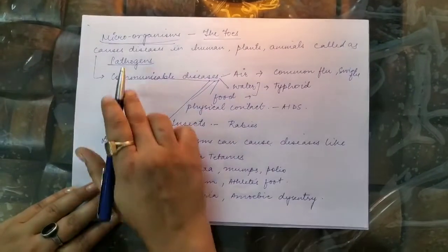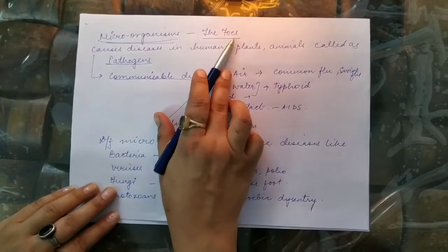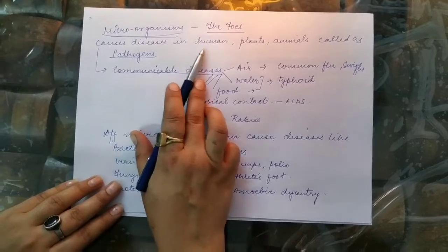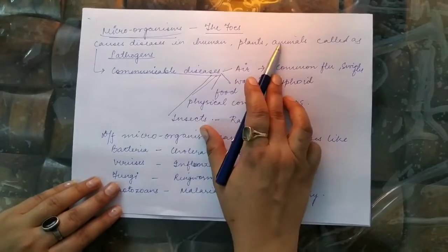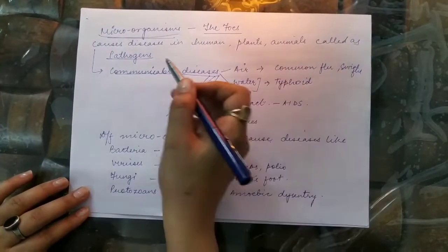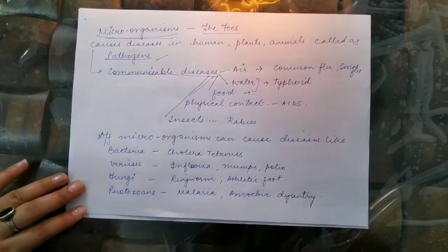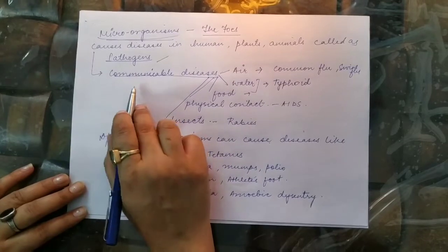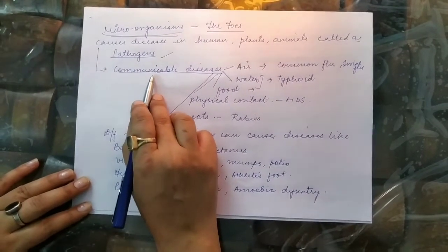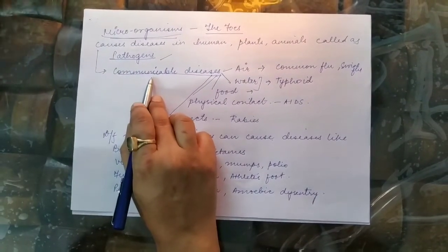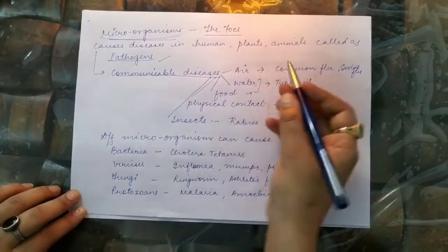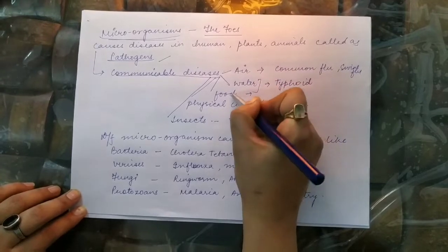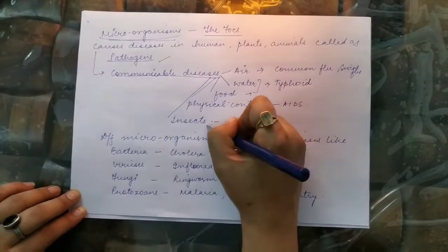Microorganisms can also act as foes or enemies. Many microorganisms cause diseases in humans, plants, and animals, and they are called pathogens. Diseases caused by microorganisms that can spread from one person to another are called communicable diseases. They can be spread through air, water, food, physical contact, and insects.